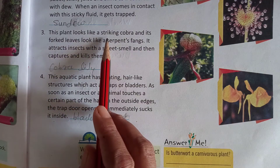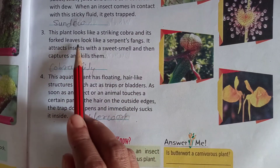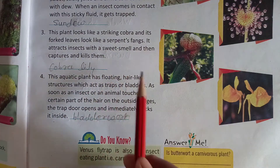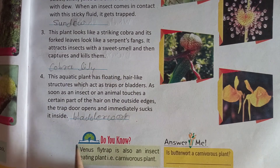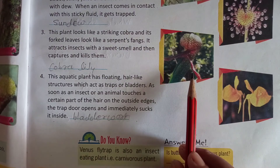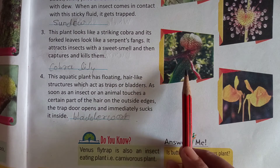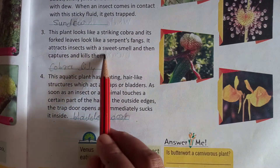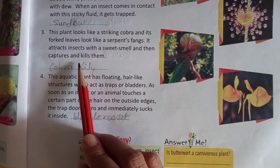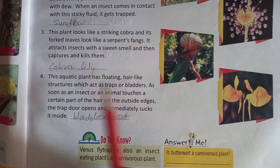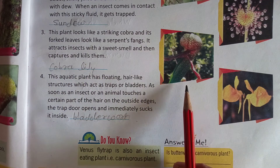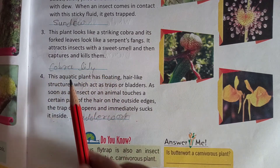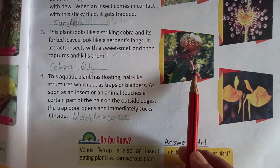This plant looks like a striking cobra and its four leaves look like a serpent's form. It attracts insects with a sweet smell and then captures and kills them.